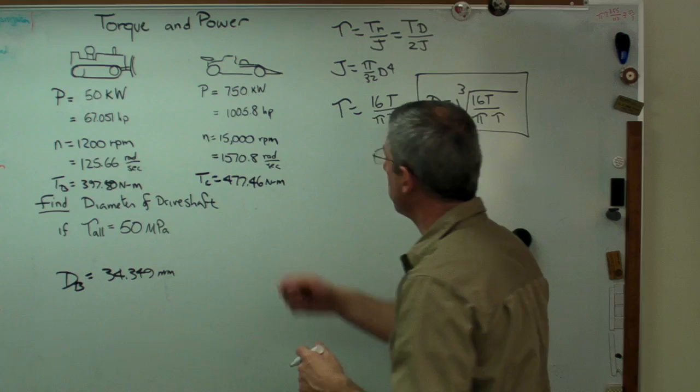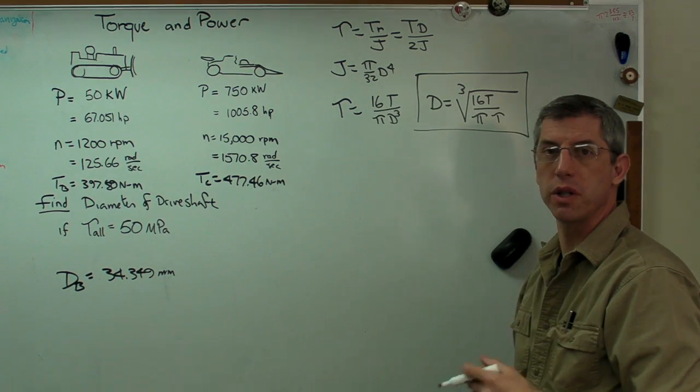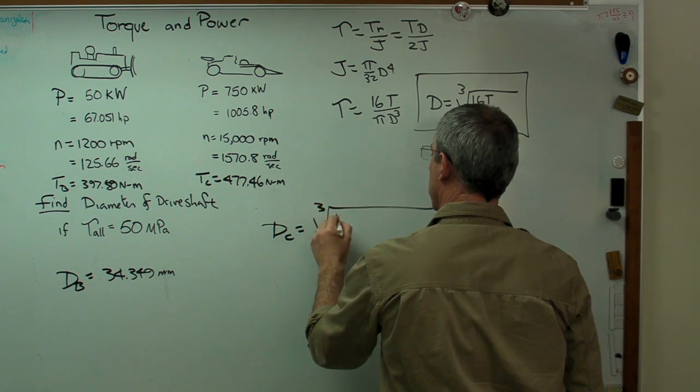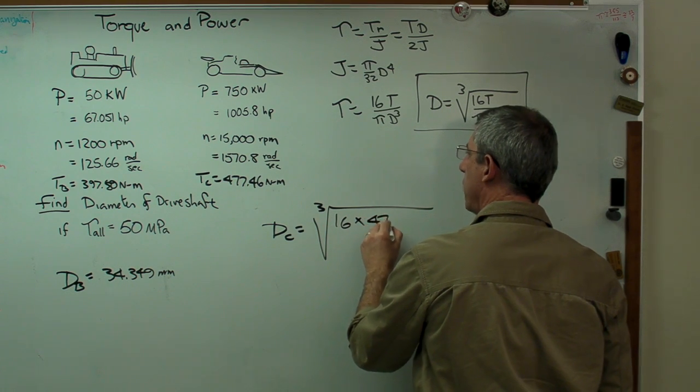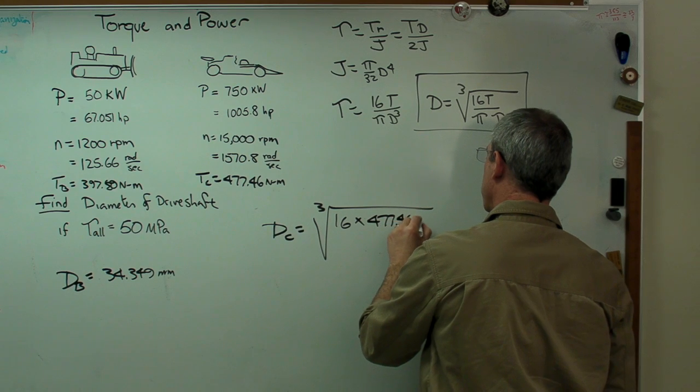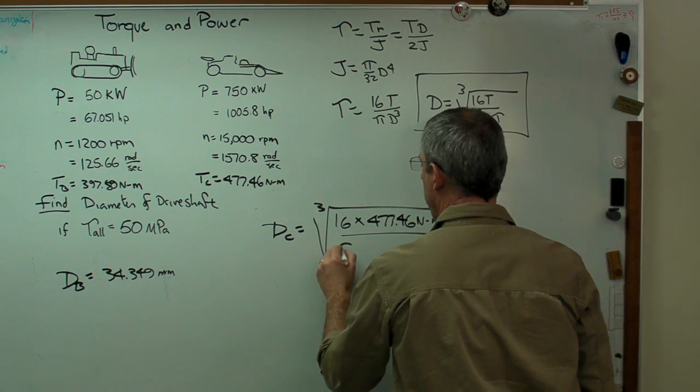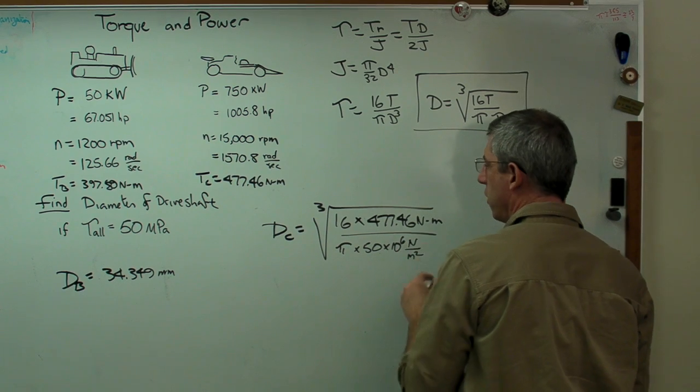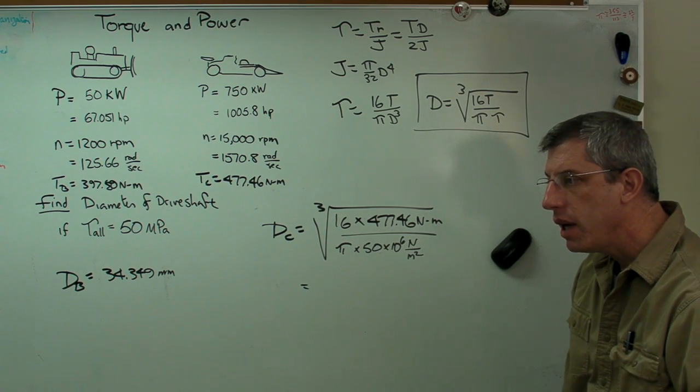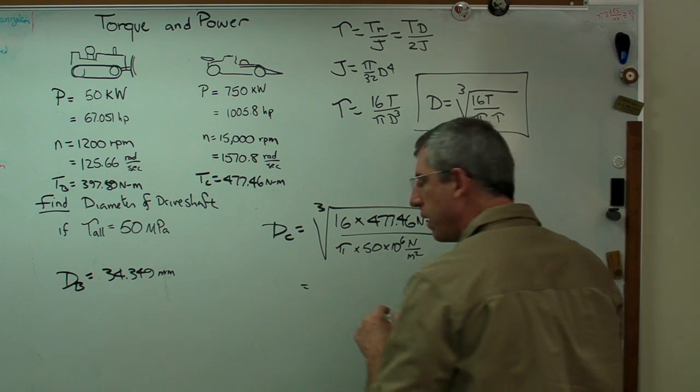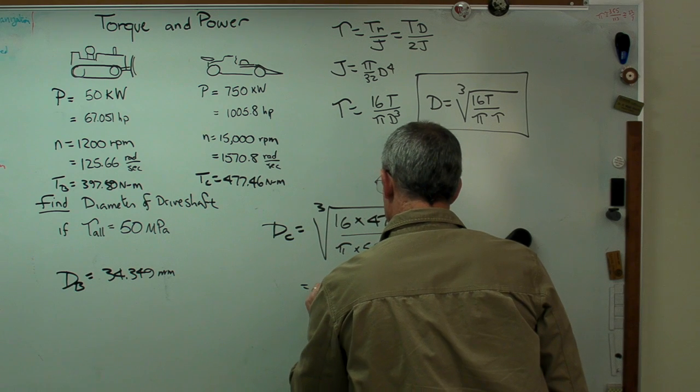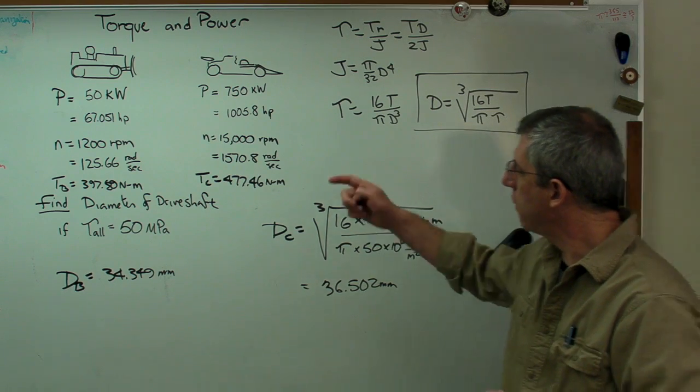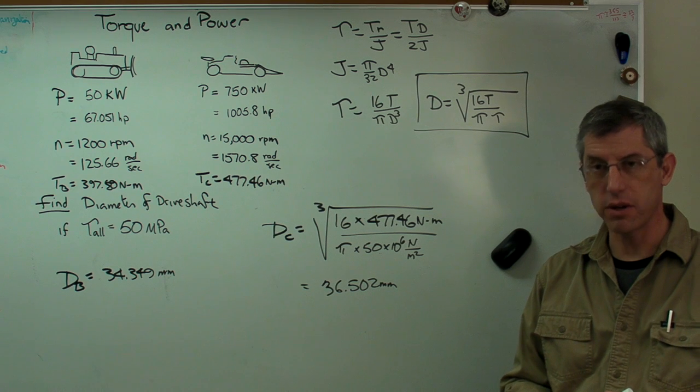Maybe 10 percent, since the torque is about 10 percent bigger. It's the cube root of 16 times 477.46 newton meters divided by pi times 50 times 10 to the sixth newtons per meter squared. Our units work out, and you get 36.502 millimeters. Look at that. Even though we have these big differences in power, there's only a 2 millimeter difference in the size of the drive shaft.